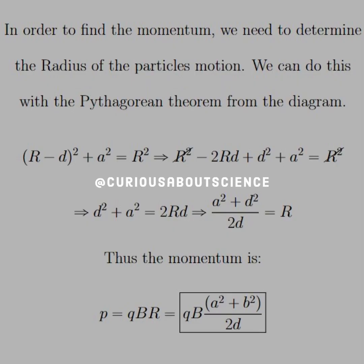So moving forward, to find the momentum, we need to determine the radius of the particle's motion, as stated by the formula. And that's the whole point of drawing the diagram is now that we can apply the Pythagorean theorem and solve for R as a function of those other two parameters, A and D.